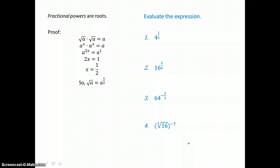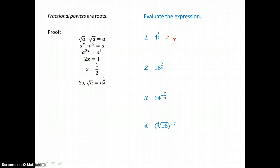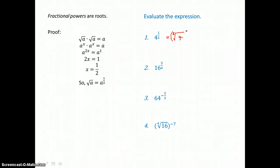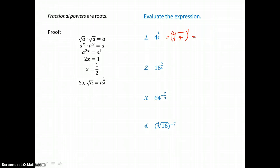Fractional powers are nothing more than roots. Here's a little proof you can read through to show that fractional powers are roots. If we evaluate 4 to the 1/2 power, we rewrite that as the square root of 4. The denominator of the fractional exponent is our root or index, and the numerator tells us how many times we multiply that root to itself. The square root of 4 is 2, and 2 to the 1st power is just 2. So 4 to the 1/2 power is the square root of 4, which is 2.